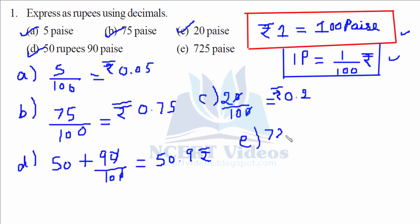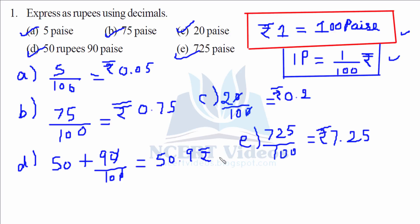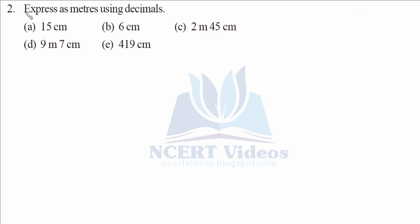The last part, part e: 725 paise. 725 over 100 gives you 7.25 rupees. That completes question number one.